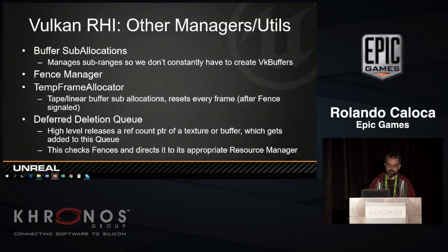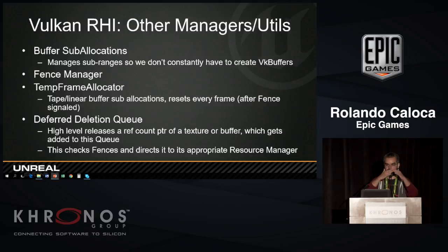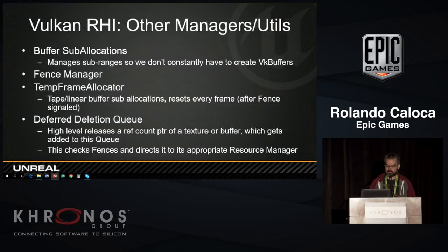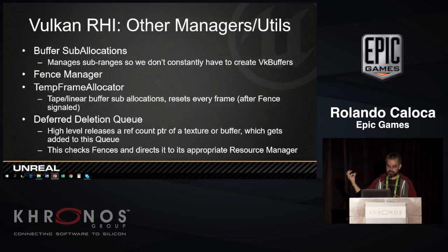The general pattern for our managers: we have a used list, a pending free list, and a free list. When we allocate a resource from the renderer, we try to find it on the free list; if there's one, we put it on the used list and return it. Otherwise, we make a new one. When the renderer says it's done with a resource, we move it from the used list to the pending free list and start a fence counter. Periodically — once per frame or every command buffer submit — we go through the free list; anything not used for N frames, we destroy. We also go through the pending free list and check the counter stored when we released it; once it's passed that counter, we move it to the free list. We also have a buffer suballocation manager to allocate as few VkBuffers as possible and manage subranges.